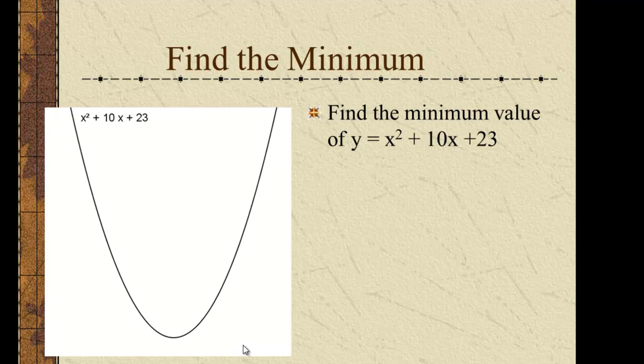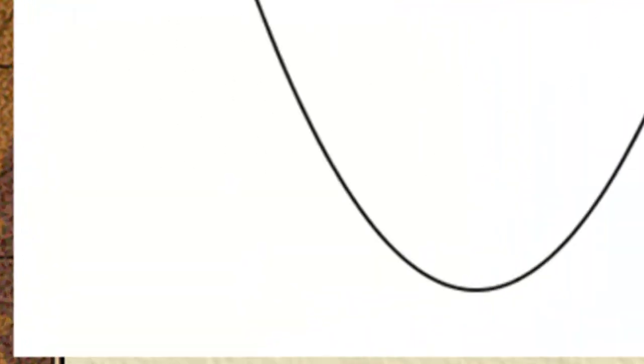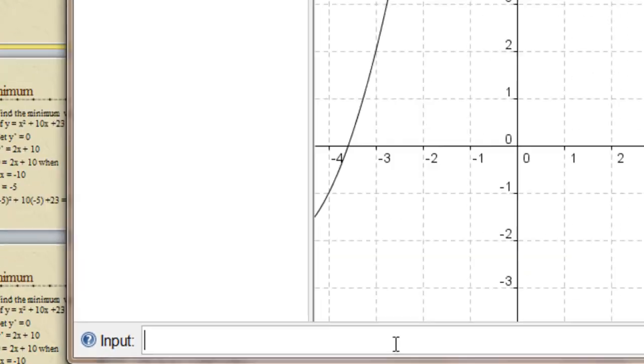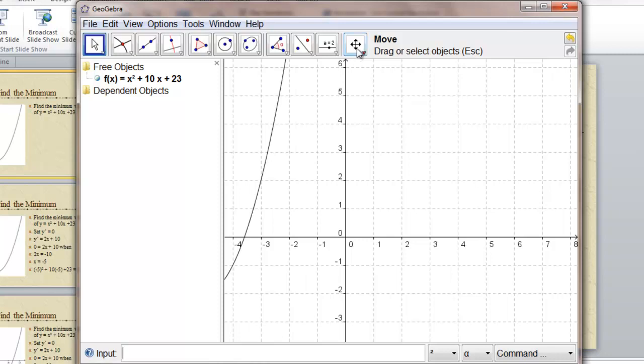And that x value is the x value of the lowest point. This function is x squared plus 10x plus 23. We have to move it over a little to see it.